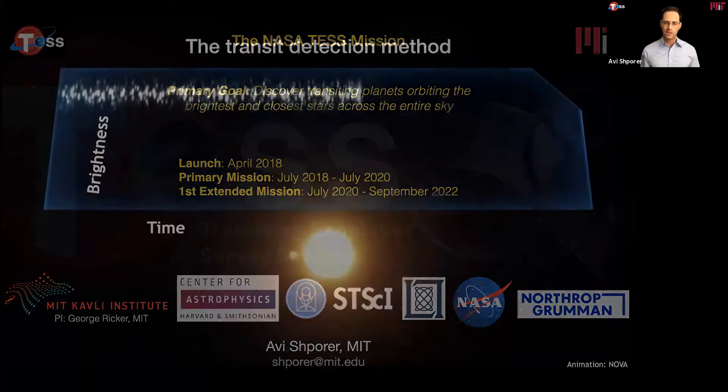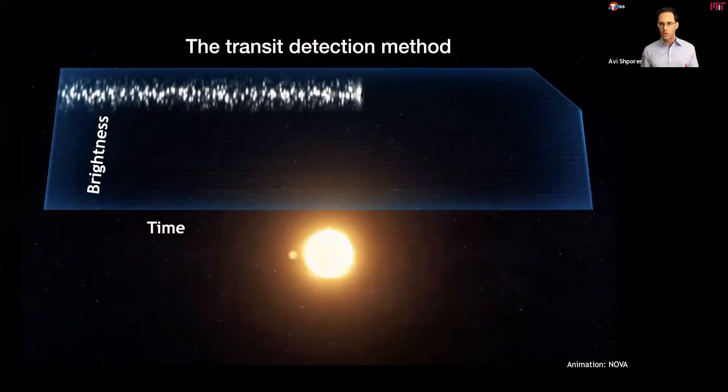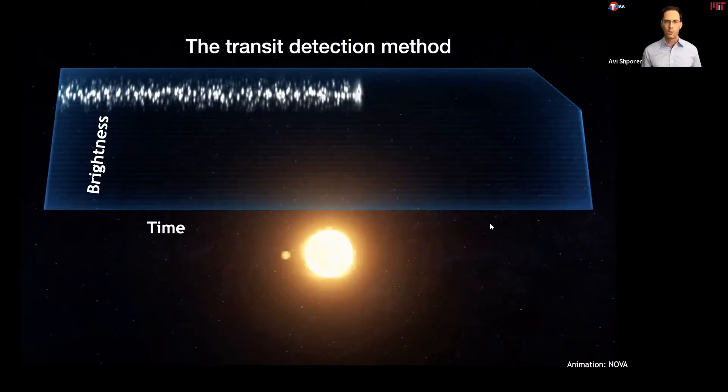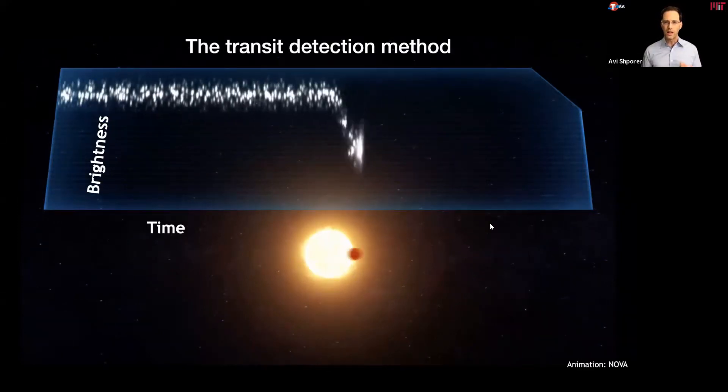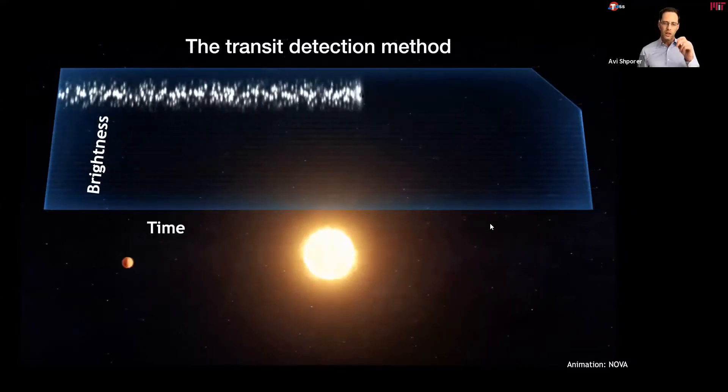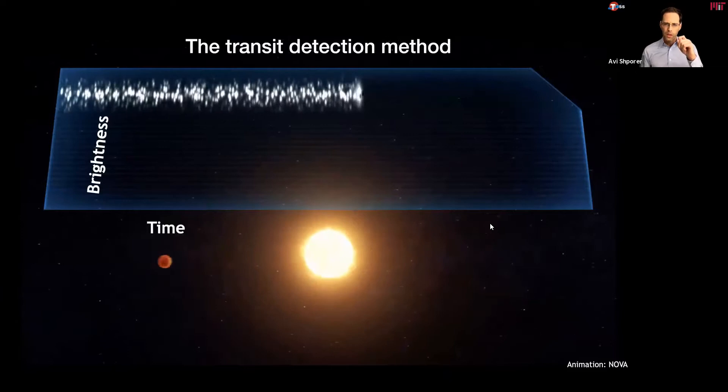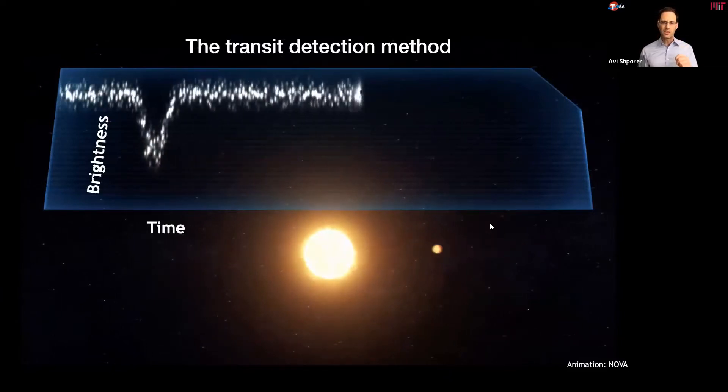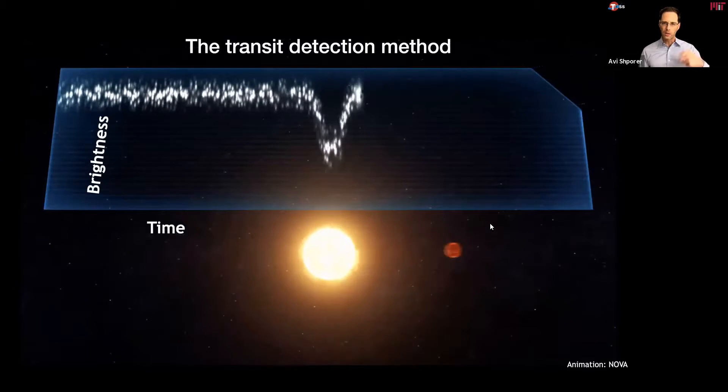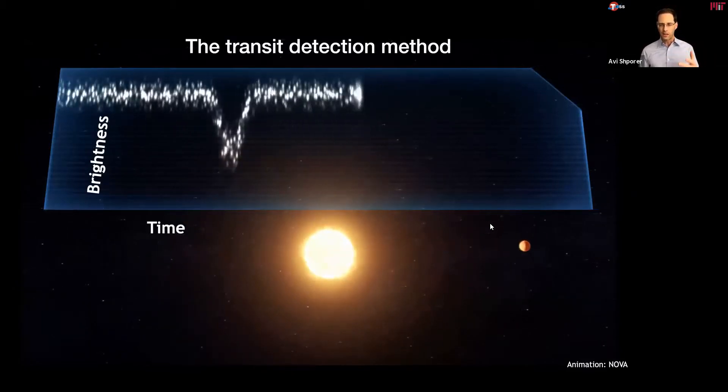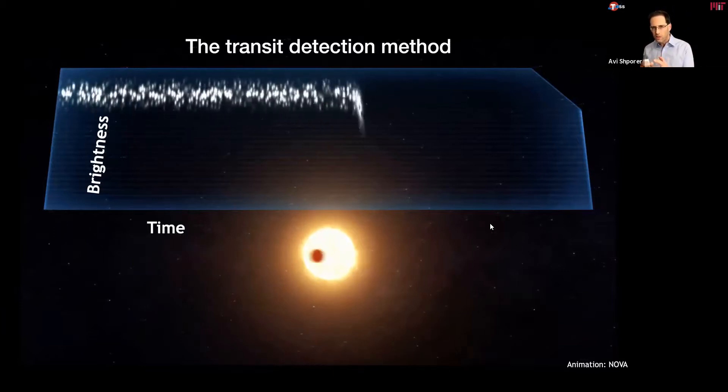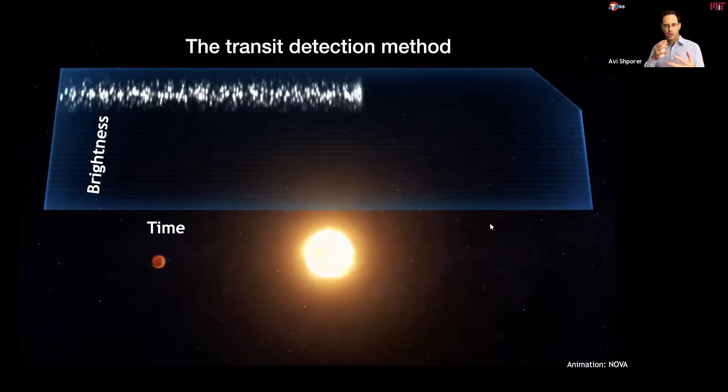So what is TESS doing? TESS is monitoring the brightness of many, many bright stars all across the sky. And what we get is a function of brightness as a function of time. As you can see here, we call it the light curve. And what we are looking for in the light curve is that repeated dimming or a small decrease in flux that is brief, but periodic, and as a result of the planet moving across or transiting the host star.